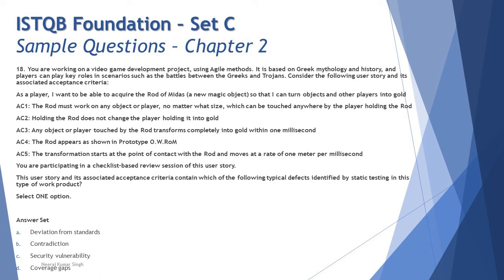AC5: the transformation starts at the point of contact with the rod and moves at the rate of one meter per millisecond while changing into gold. The question asks: you are participating in a checklist-based review session of this user story. Which of the following typical defects, identified by static testing, does this user story and its associated acceptance criteria contain?